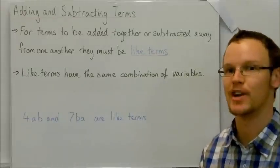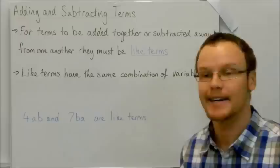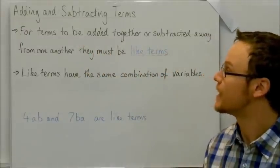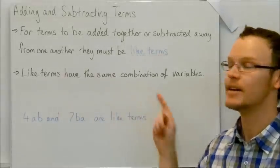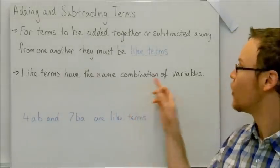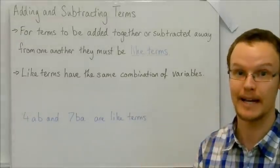Today we're going to look at adding and subtracting terms in algebra. So for terms to be added and subtracted, they need to be like terms. And the term like terms means they need to have the same combination, the same combination of variables. That is the letters that could be any number.